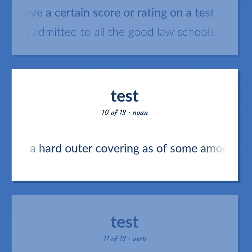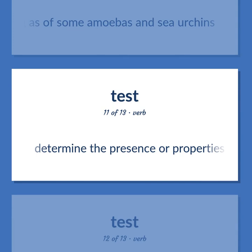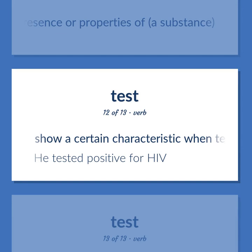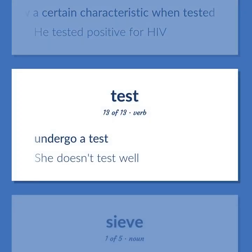A hard outer covering as of some amoebas and sea urchins. Determine the presence or properties of a substance. Show a certain characteristic when tested. He tested positive for HIV. Undergo a test. She doesn't test well.